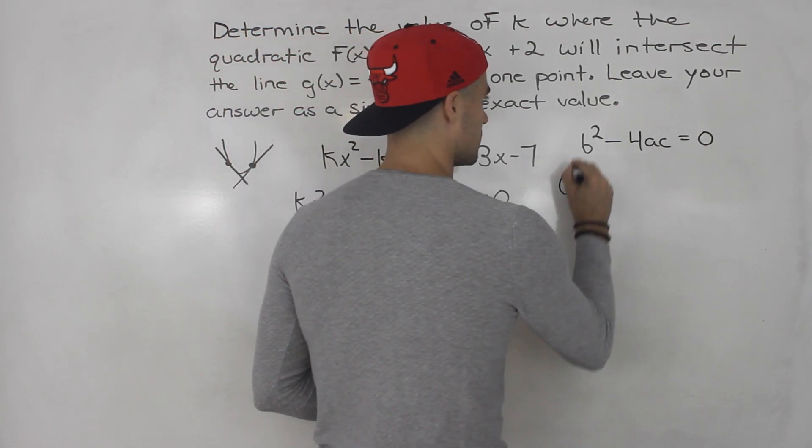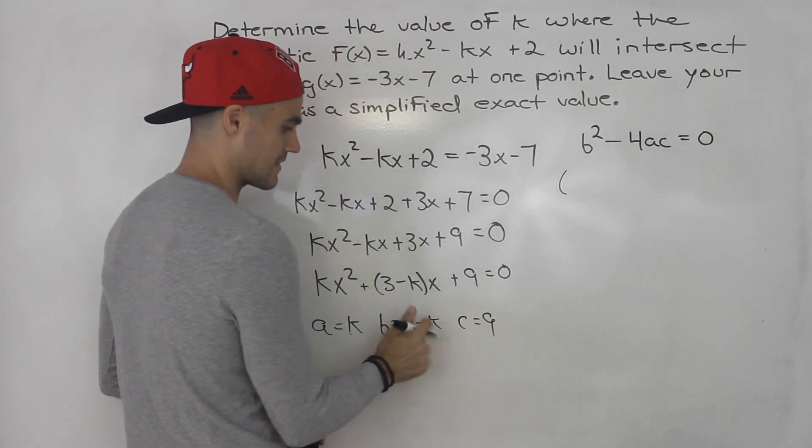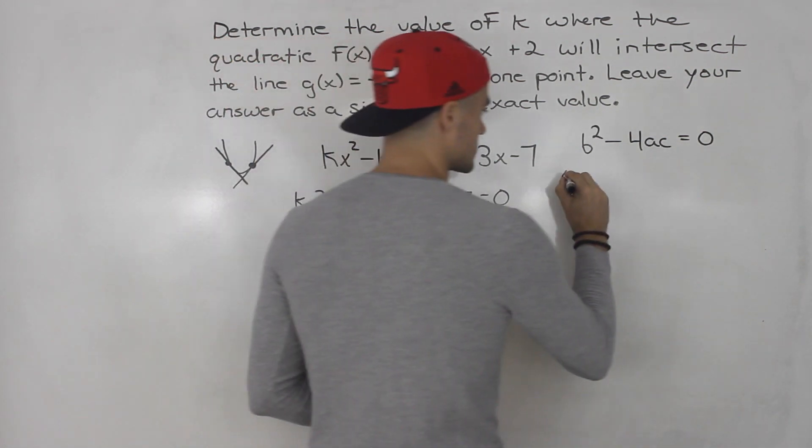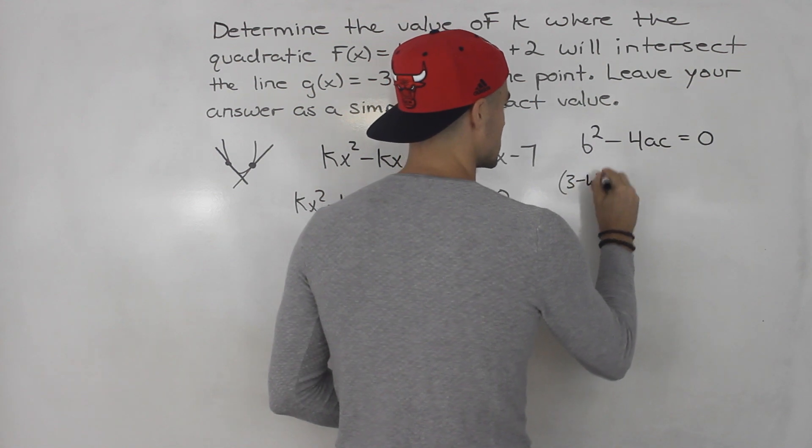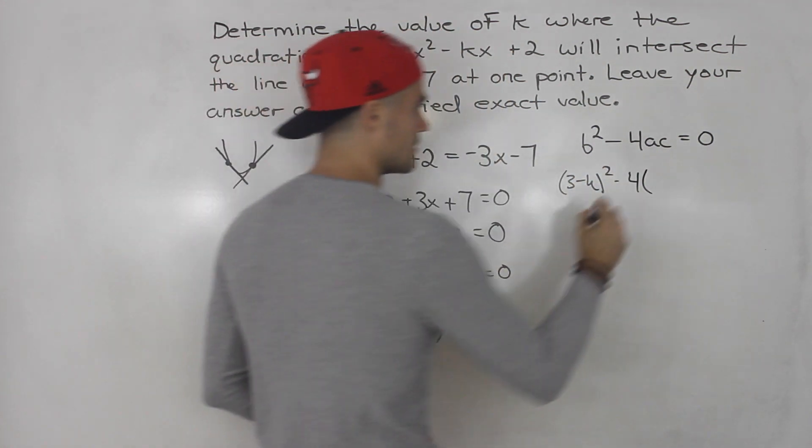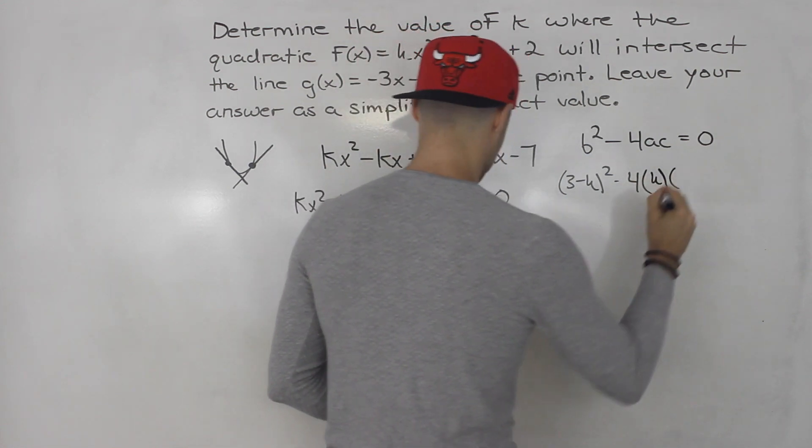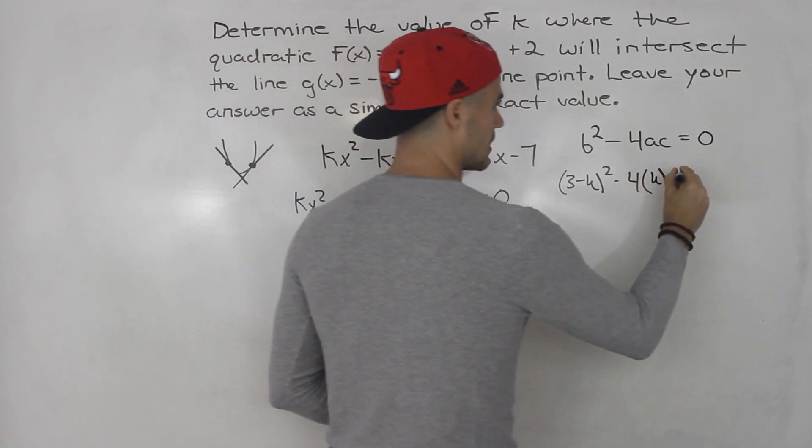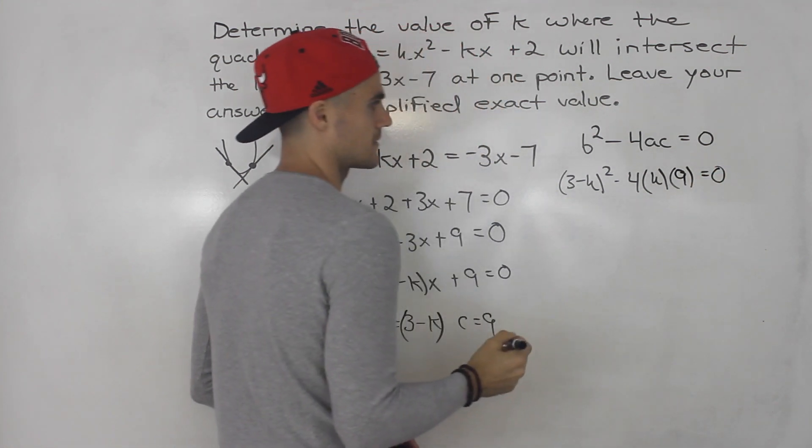So here for b, we would plug in 3 minus k, that entire expression, that's going to go in brackets. So 3 minus k squared, minus 4 times a, which is k, times c, which is 9. That's going to equal zero.